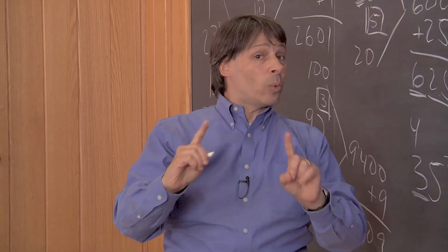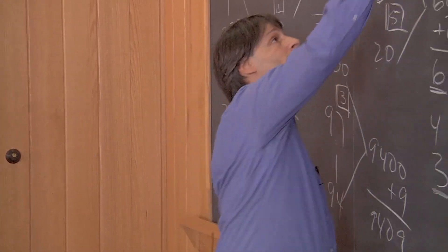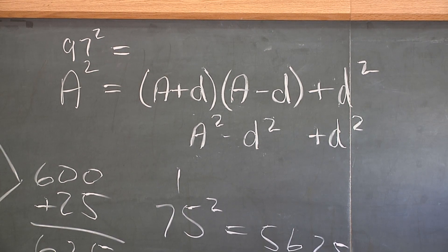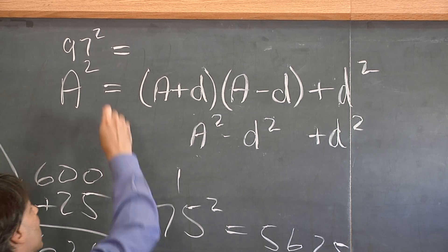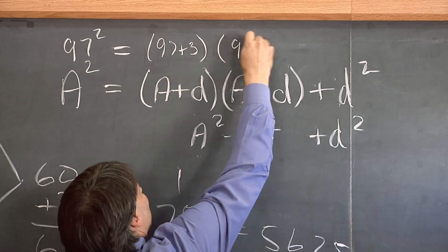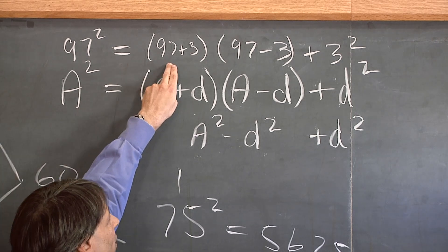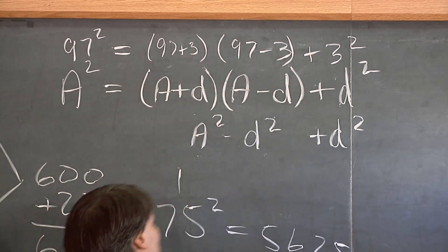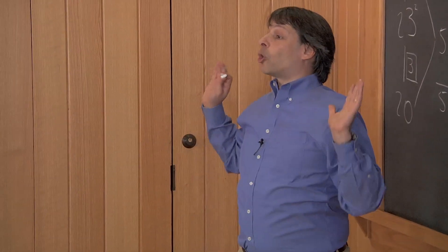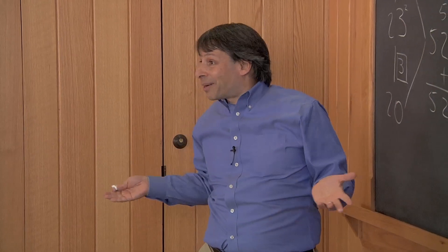Now this is exactly what we were doing when we were squaring these numbers. Let's say for instance when we squared 97, what was our D? What was the distance we traveled? We traveled 3. And this formula says that 97 squared is equal to 97 plus 3 times 97 minus 3 plus 3 squared. That is, it's 100 times 94 plus 9. And that's exactly what we did here. By the way, this formula shows that it will also work for 3 digit numbers and higher.